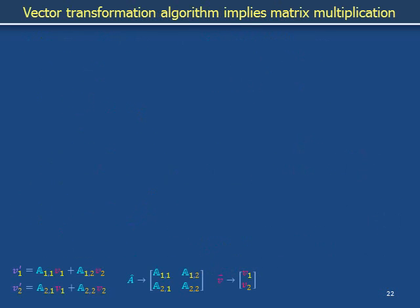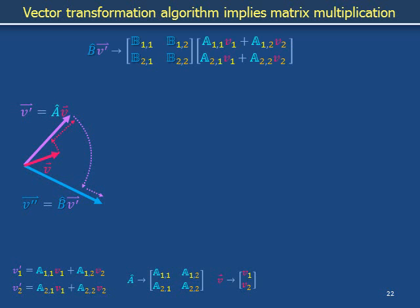Now let's use matrices to represent the combined actions of more than one operator on a vector. Take magenta vector v and obtain purple vector v-prime by applying a-hat. Then take purple vector v-prime and get blue vector v-double-prime by applying a second operator b-hat. Suppose a basis set and coordinate grid have been chosen so that we can represent v-double-prime in matrix notation. Application of b-hat to purple vector v-prime is represented by placing the square matrix (B11, B12, B21, B22) next to the column vector for purple v-prime. Since purple v-prime results from applying a-hat to magenta v, the column vector for v-prime includes both the matrix representation of a and the column vector representation of magenta v.